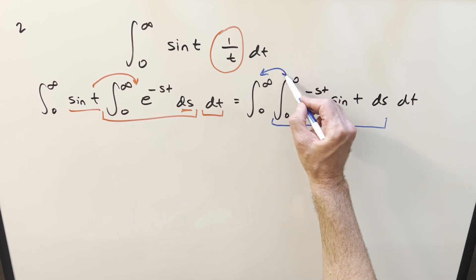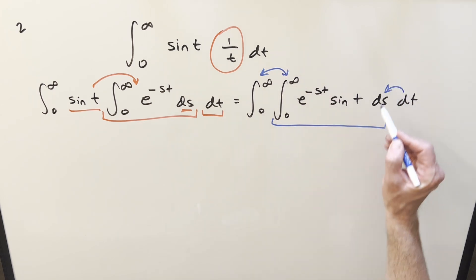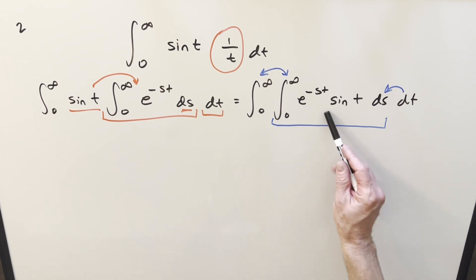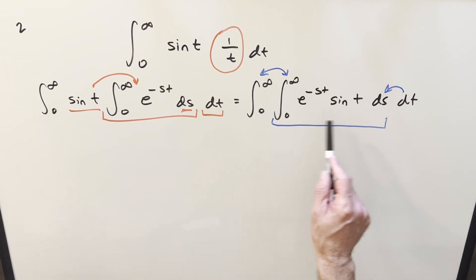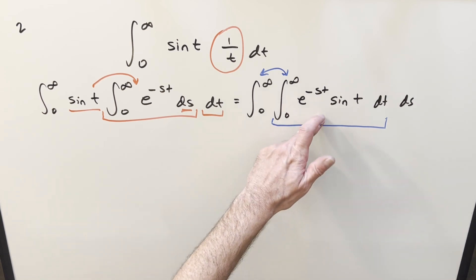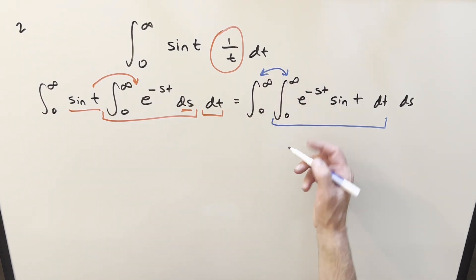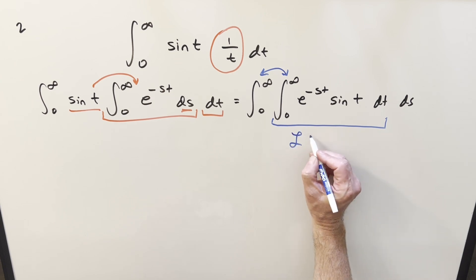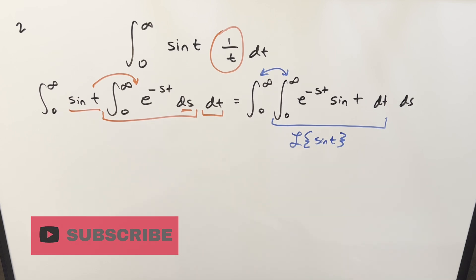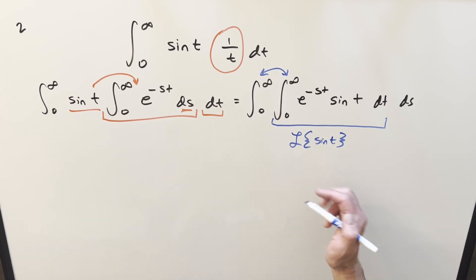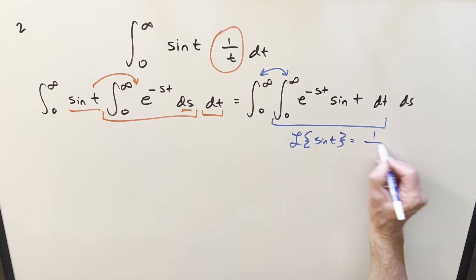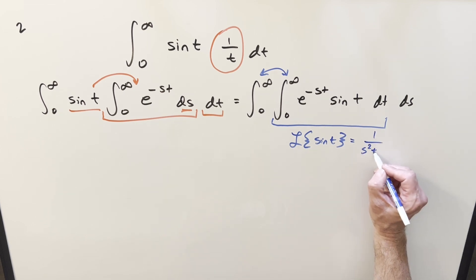Instead, let's swap the order of integration — so we're now integrating with respect to t first. We have no trouble with convergence here because sine is bounded between −1 and 1, and the exponential goes to 0 really fast. Now the inner integral, being integrated with respect to t, is perfectly set up: this is exactly the Laplace transform of sine of t. If you're not familiar with Laplace transforms, I'll provide a link to the playlist. The formula for the Laplace transform of sine of t is 1 over s² + 1.